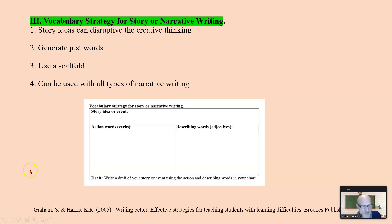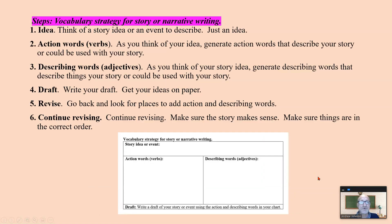This was an interesting one described by Graham and Harris. Sometimes story ideas get in the way and can disrupt creative thinking. So here, you simply generate just the words, and you use the scaffold then to create the story. You have your story idea there. As you think of your story idea, then you just generate some action words or verbs related to that, and some describing words. It's that idea that ideas beget more ideas. You write a draft of your story then using the action words, things that happen, and the describing words. You can pause and read that vocabulary strategy for story or narrative writing.